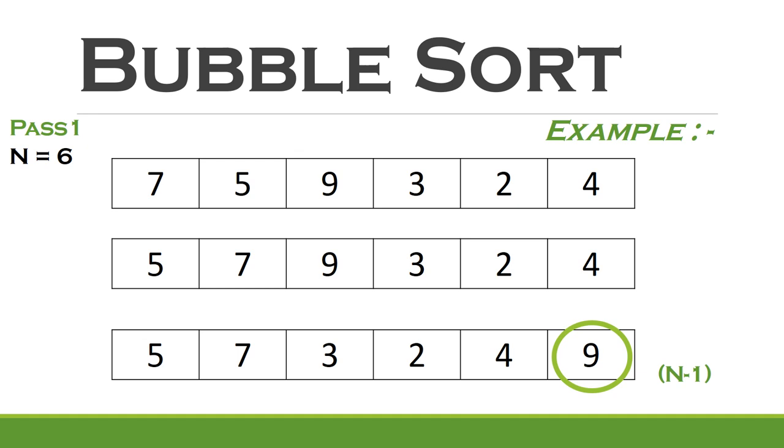In this list of 6 elements, we need 5 comparisons. So in a list of n elements, we need n-1 comparisons in each pass.